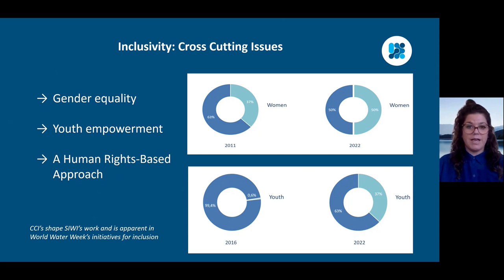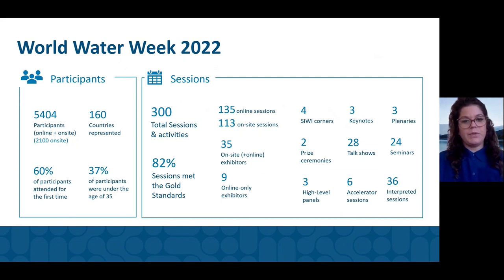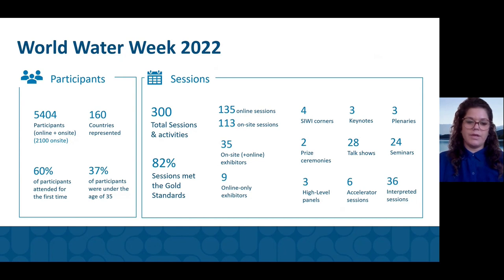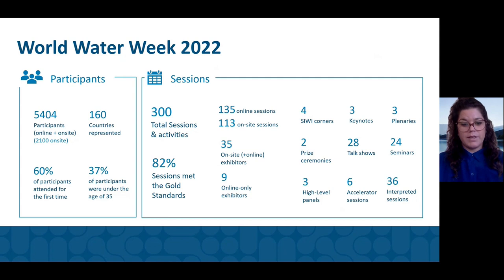The cross-cutting issues, or CCIs, such as gender equality, youth empowerment and a human rights-based approach, shape the work and are apparent in the World Water Week initiatives for inclusion. The 2022 event attracted over 5,000 participants and 160 countries were represented. We also encouraged the inclusion of youth and gender equality through the Gold Standard label, which required the session organizer to have at least 40 percent women participation in panels and at least one speaker under the age of 35. There were 82 percent of sessions that met the gold standard last year.